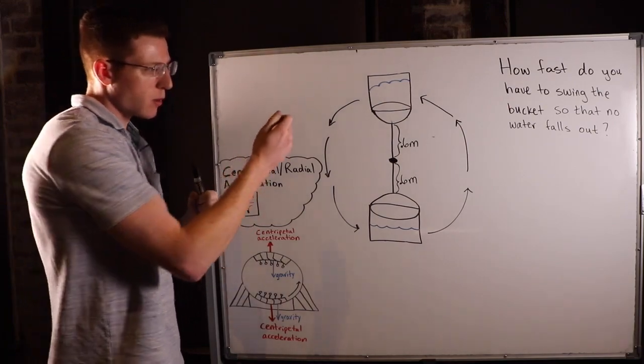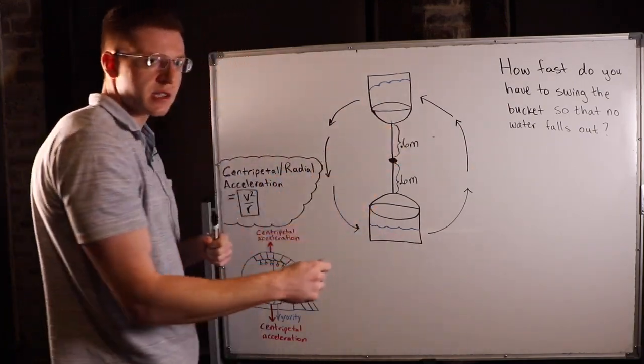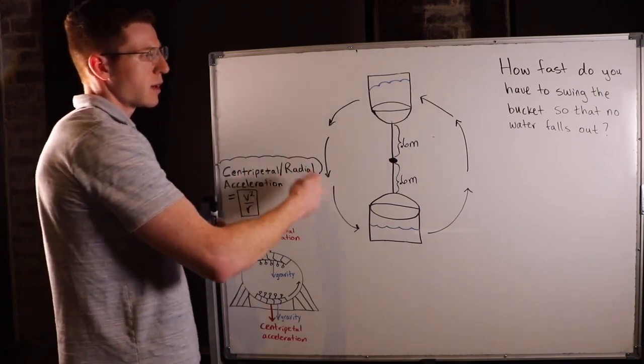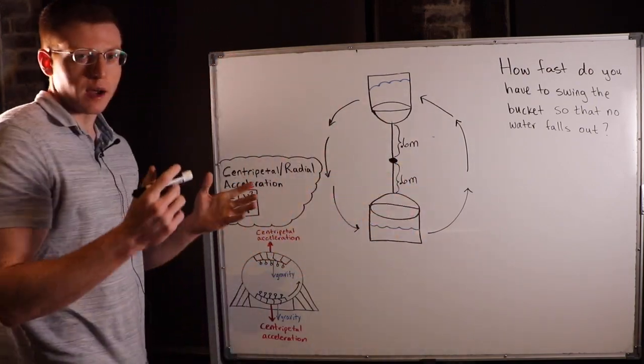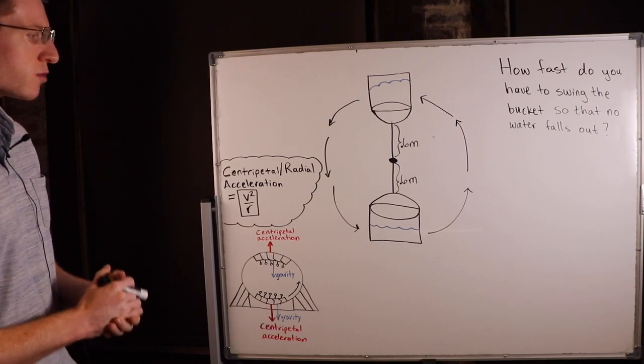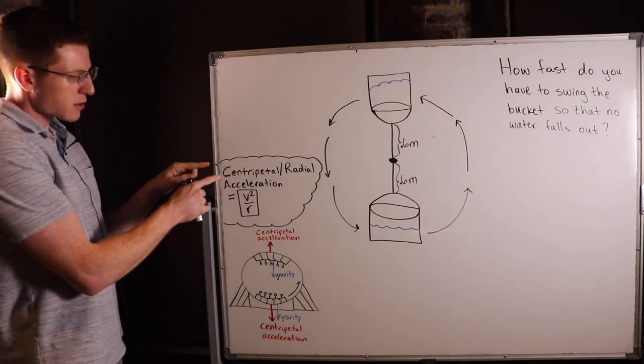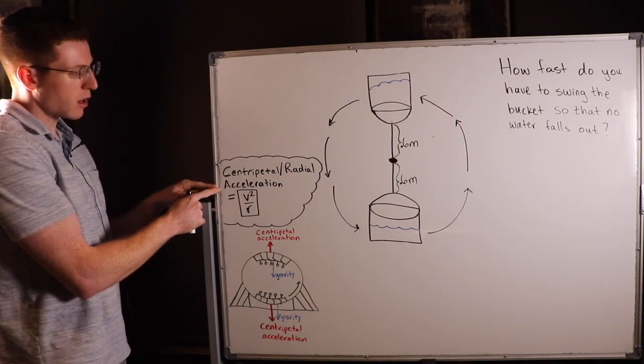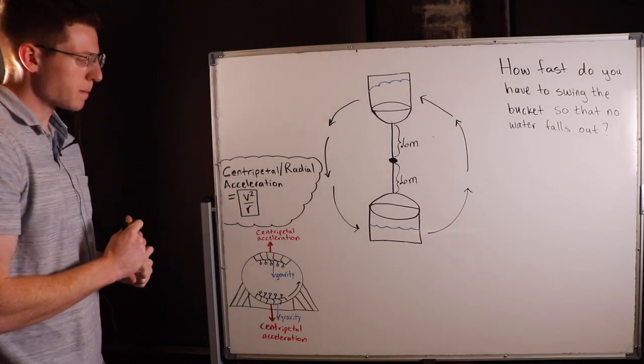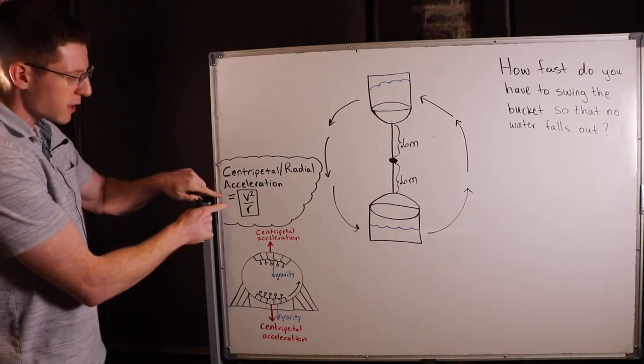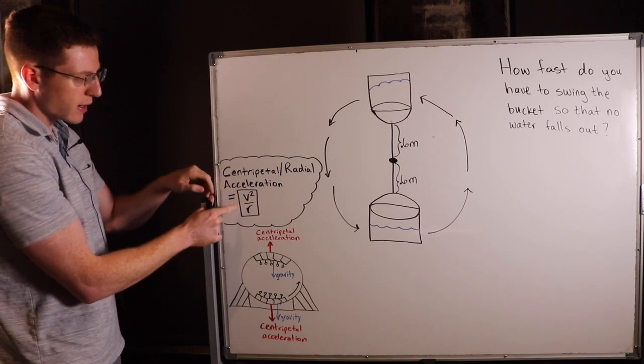You can imagine if you had a bucket of water and you were to swing it fast enough, there would eventually reach a point where no water would fall out. We can actually describe that with physics. The reason this happens is because of something called centripetal acceleration, also known as radial acceleration, and it is quantified by the expression velocity squared over radius.